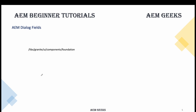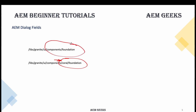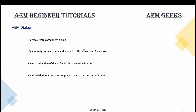In AEM, two types of components or fields are available: one is Foundation and another is Coral Foundation. Both still work as of today, but currently we use Coral Foundation components, so try to use Coral Foundation. If you have older projects you might see fields from Foundation components. As part of this tutorial and the next few tutorials, we'll cover how to create dialogue, dynamically populate data in fields.